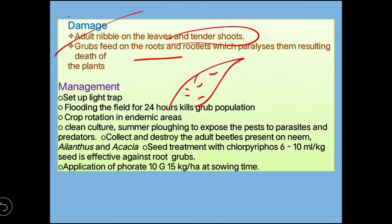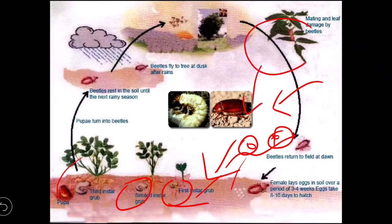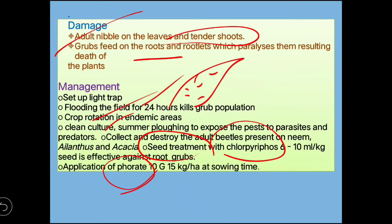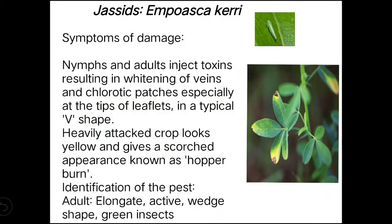You can collect adults by dislodging them from neem trees and destroying them. Create flooding conditions in the field for 24 hours. Maintain crop rotation and clean cultivation. Apply phorate 4G at 15 kg per hectare at the time of sowing, or treat seeds with chlorpyrifos at 6–10 ml per kg of seed.